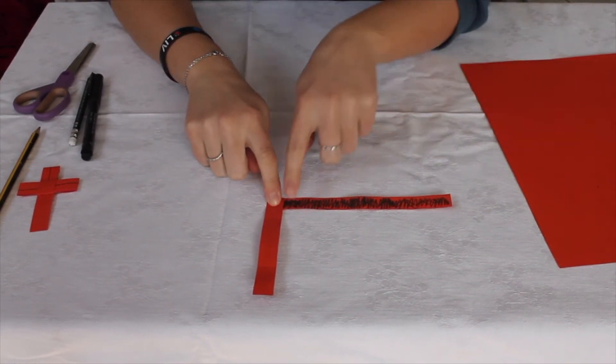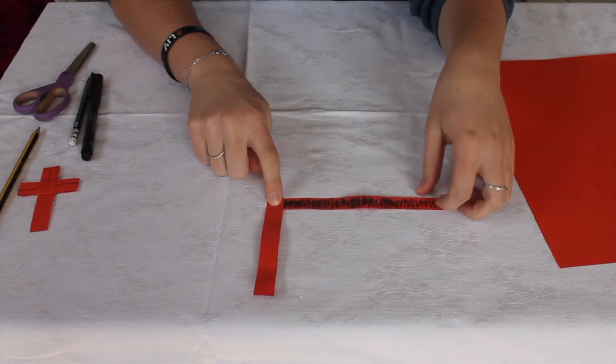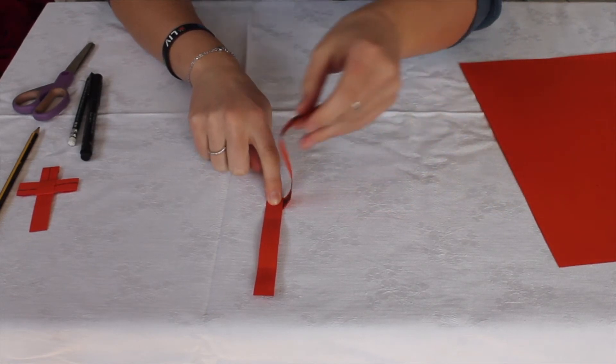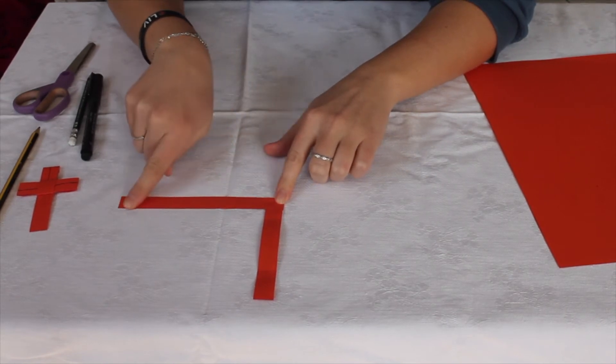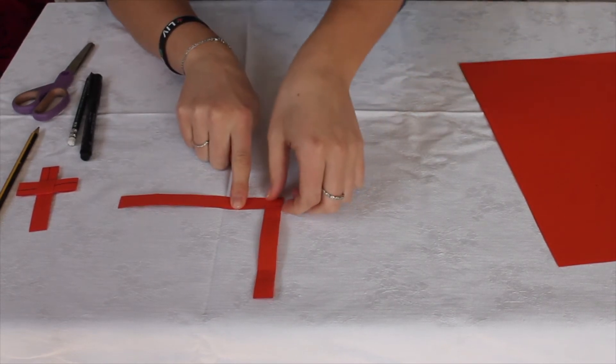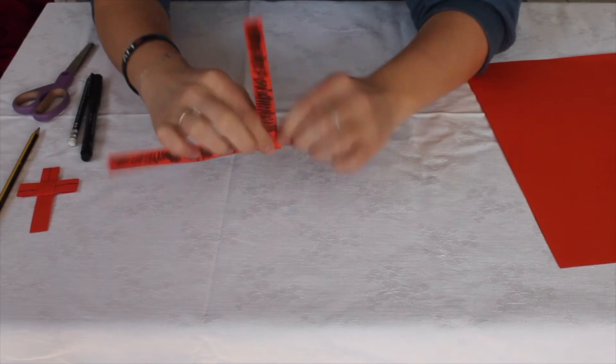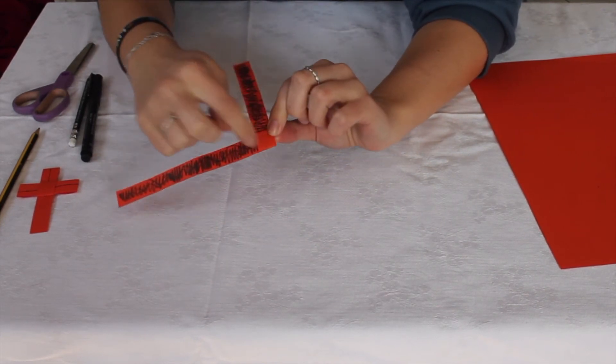We're next going to take this bit here and fold it across like this. Still keeping the right angle and you'll notice we've made somewhat of a pocket in the middle here.